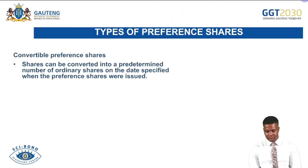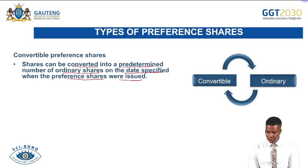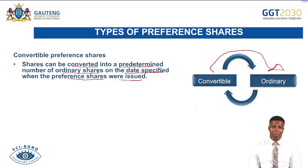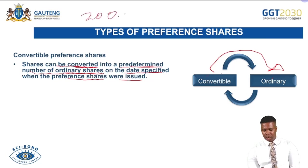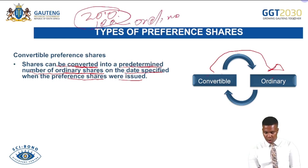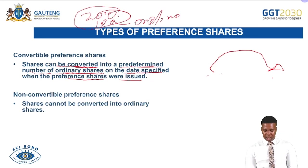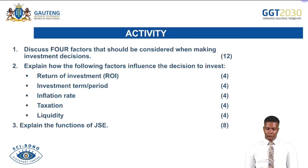Convertible preference shares are shares that can be converted into a predetermined number of ordinary shares. For example, if you bought 200 preference shares, you may be given an option to convert 100 of them into ordinary shares on a specific date — perhaps to make more money. Non-convertible preference shares cannot be converted into ordinary shares. With convertible shares, the option and predetermined number are clearly specified in the agreement.